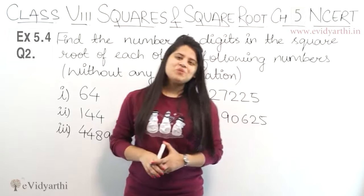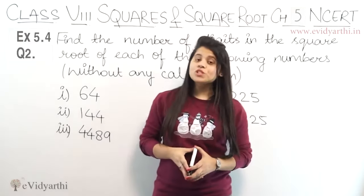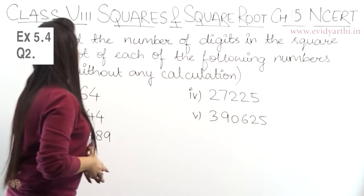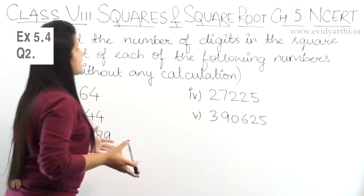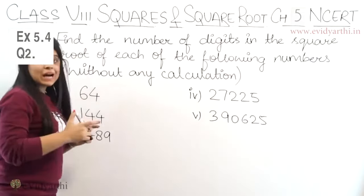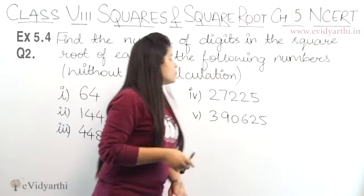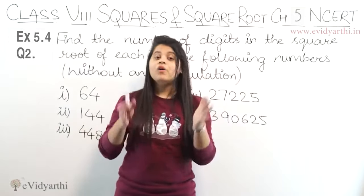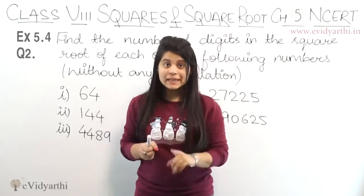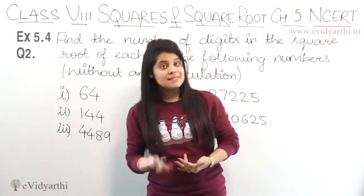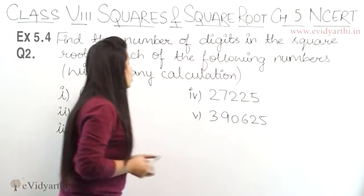Hello everyone, this is Fanzi from Evie Theathy coming to question number 2, exercise 6.4. In this question we have to find the number of digits in the square root of each of the following numbers without any calculation. Let's see that the numbers given here, the square root will have how many digits. But we don't have to calculate it, we have to do it without calculation.